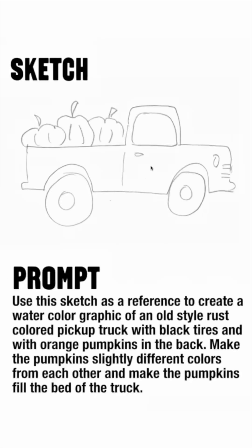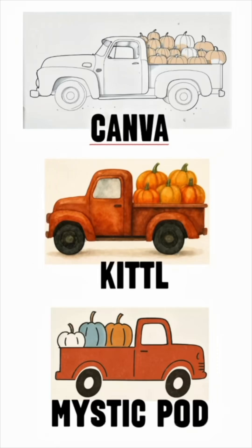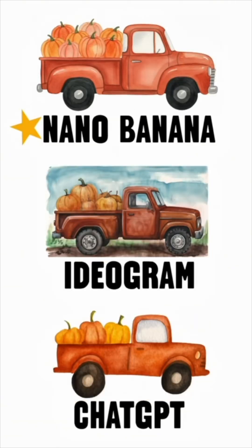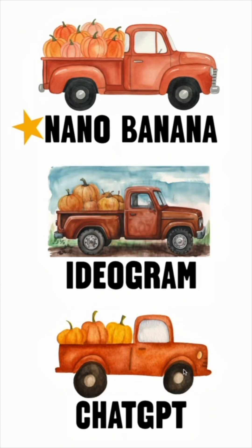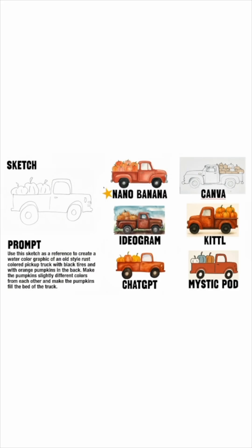Next one — I have this truck. You can see it's a really bad sketch. Same prompt, let's see what it did. I think Nano Banana did great — it turned this into that. It got the idea: it's still an old pickup truck, it's rust colored, it's watercolor, it's on a white background. ChatGPT took it a little more literal. It's really good at transferring exactly what you draw — like the three pumpkins, the weird tires, the weird sketch that I did. I don't know if it understands the assignment that I want it to look better than the reference.